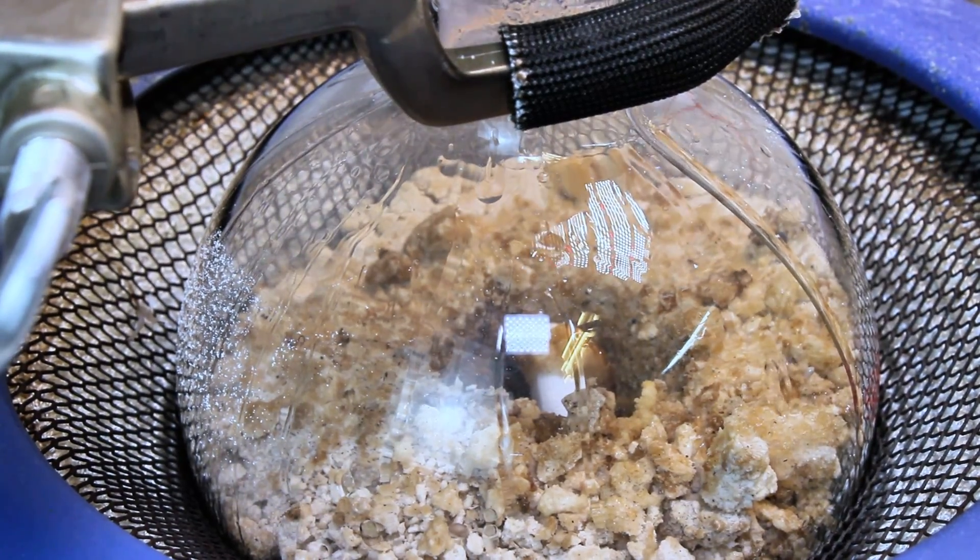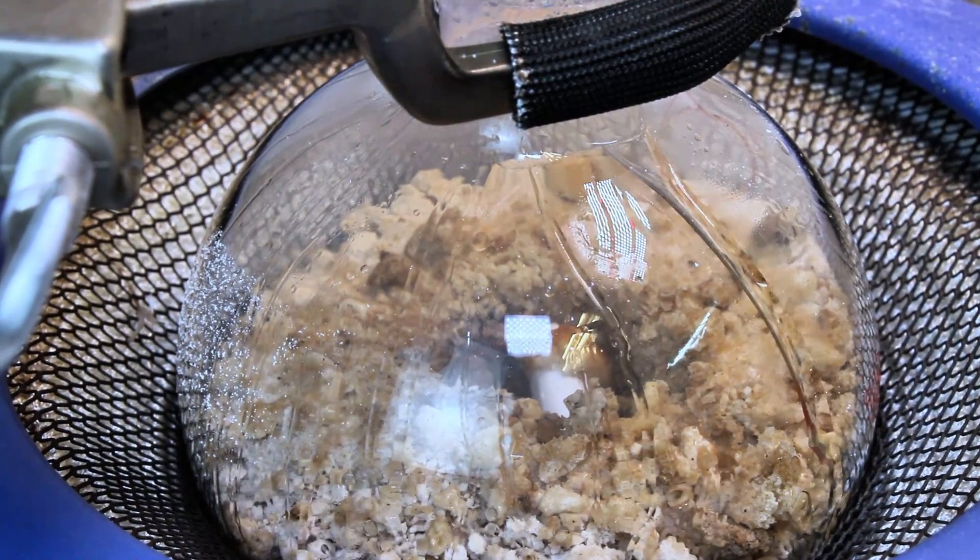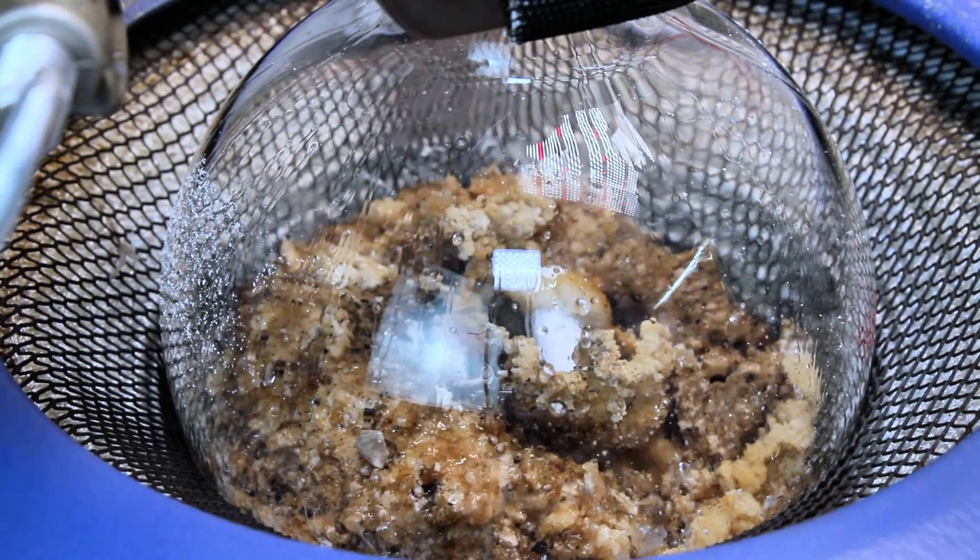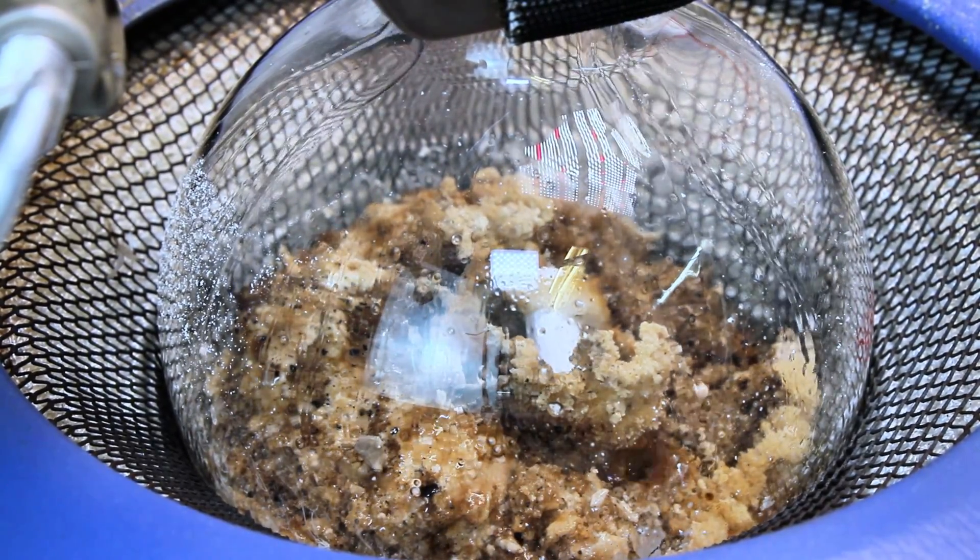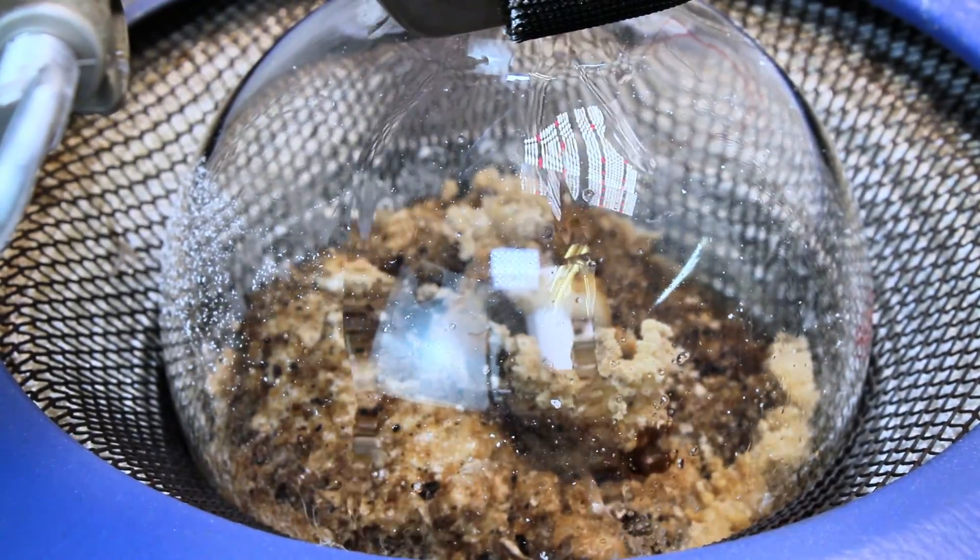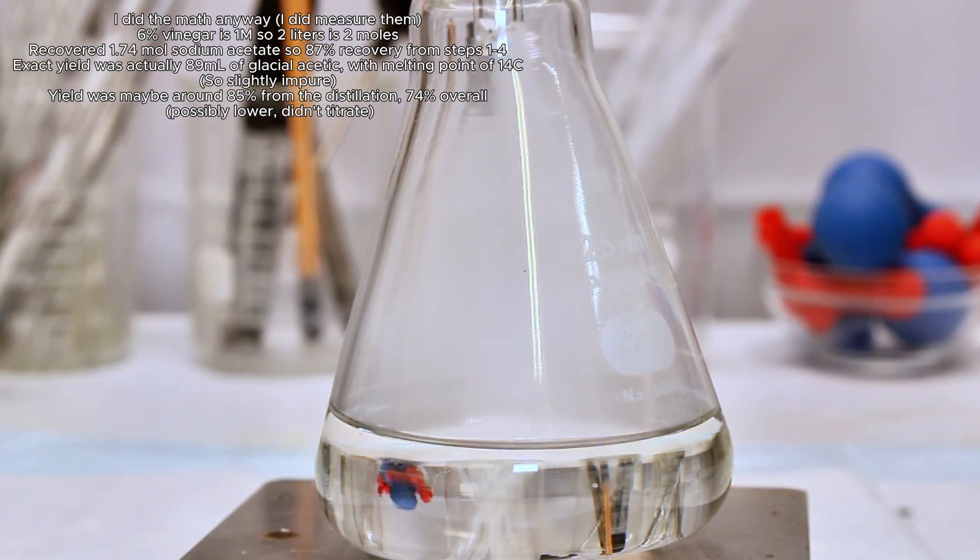Once all the sulfuric acid has been added, I go ahead and crank up my heating mantle to boil away the acetic acid that didn't boil away on its own, and this slowly drips into my collection flask. After the distillation had slowed down significantly, I went ahead and cut the heat and disassembled my apparatus. This left me with around 90 milliliters of glacial acetic acid, and I'm not sure what the yield would be on that as I didn't measure any of my starting reagents, but I can pretty much guarantee it's not very good.